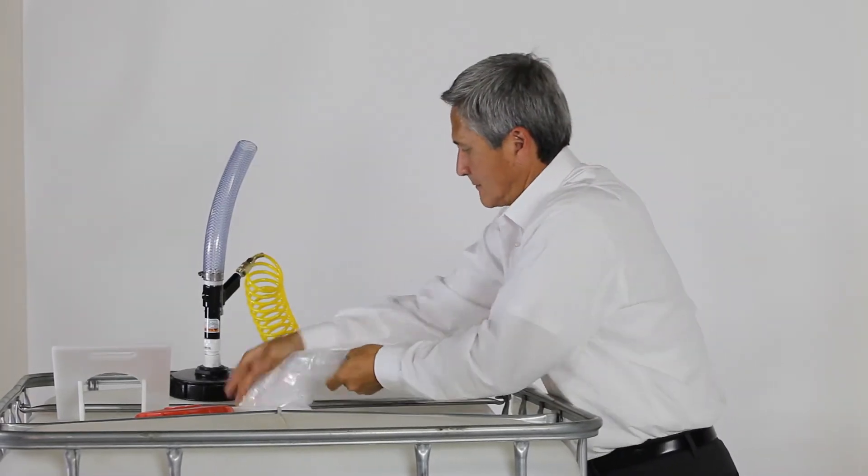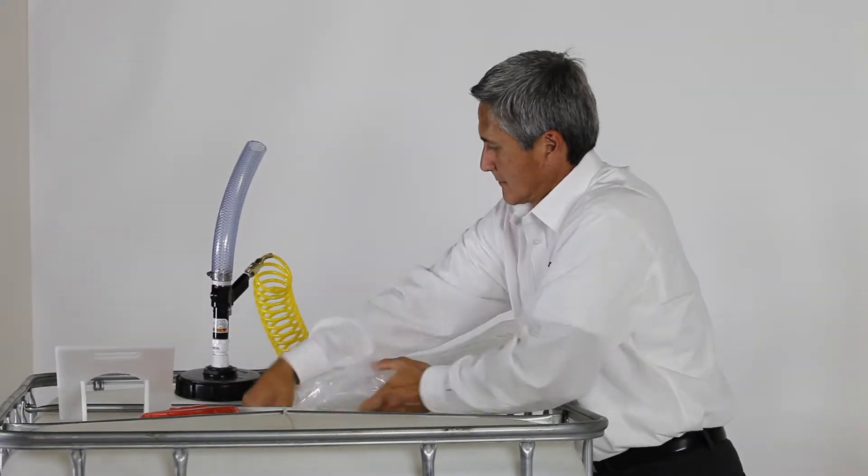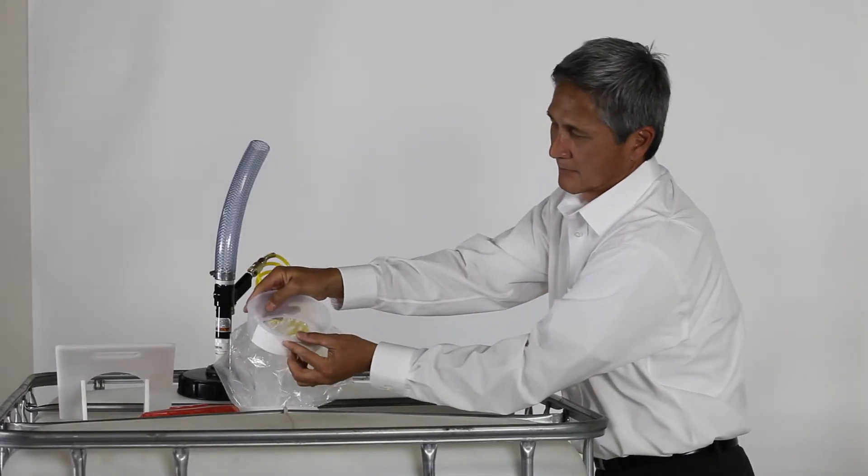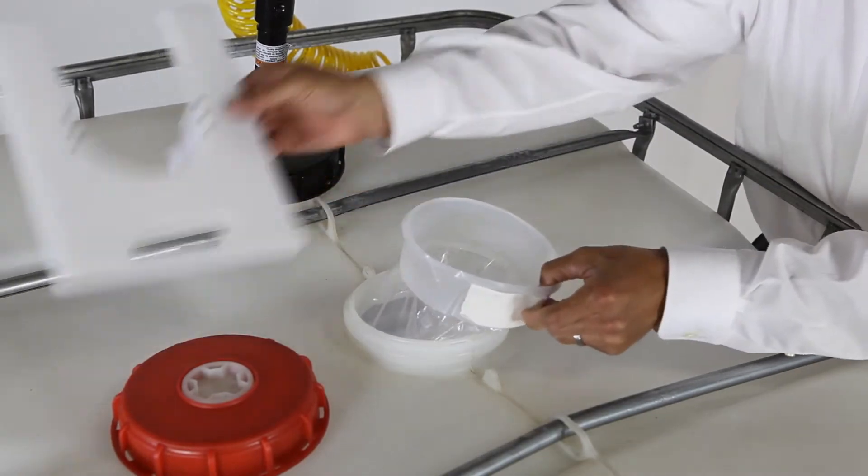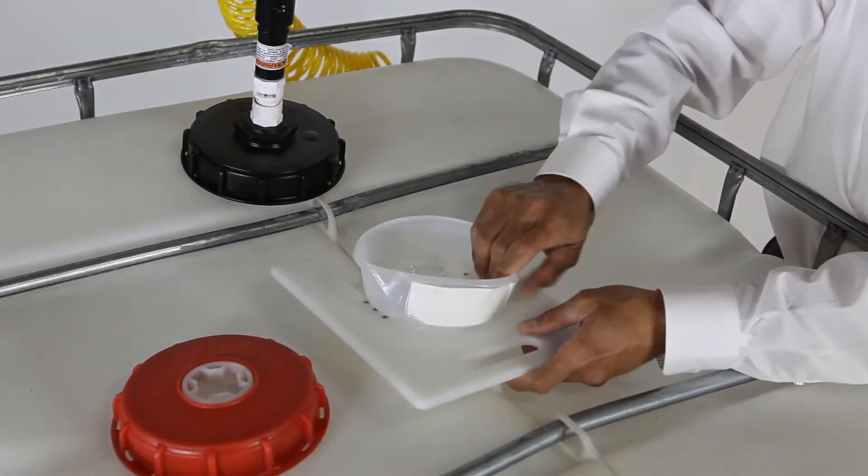Gently lower liner into the IBC while ensuring that the orientation tab on the liner flange is pointing towards the dispense valve on the front of the IBC. Before completely seating the flange, allow enough space between the flange and the fill opening to insert the deck tool.